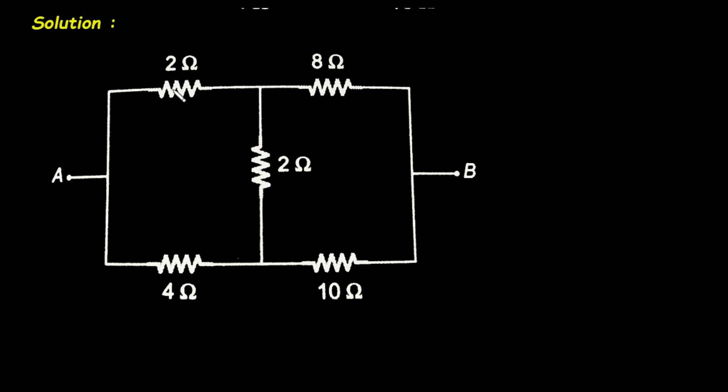So here we can see if we take 2 divided by 4, then we get 1 by 2. And if we take this 8 divided by 10, so 8 divided by 10 we get 4 by 5. So here 1 by 2 is not equal to 4 by 5. So hence the bridge is not balanced.